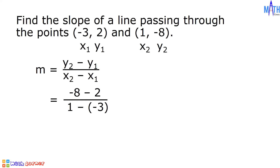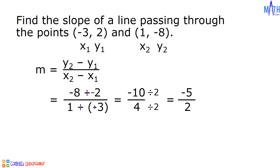Let us simplify. Negative 8 minus 2 is also equal to negative 8 plus negative 2. Change the sign of the subtrahend and proceed to addition. Negative 8 plus negative 2 is equal to negative 10. In the denominator, change the sign of the subtrahend: negative 3 becomes positive 3, and we proceed to addition, giving 1 plus 3 equals 4. Let us simplify negative 10 over 4 by dividing the numerator and the denominator by 2. Negative 10 divided by 2 is equal to negative 5, over 4 divided by 2 is equal to 2. The slope of a line passing through the points (-3, 2) and (1, -8) is equal to negative 5 over 2.